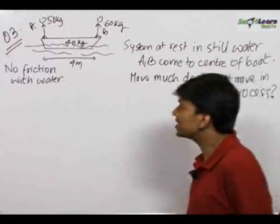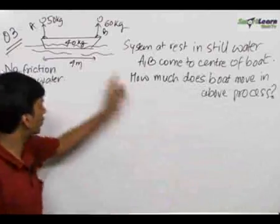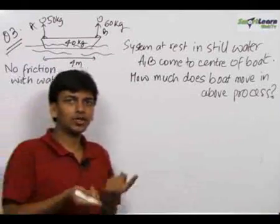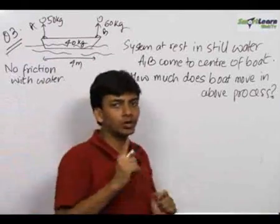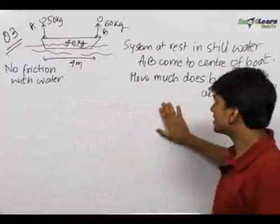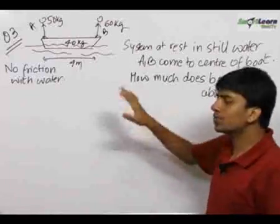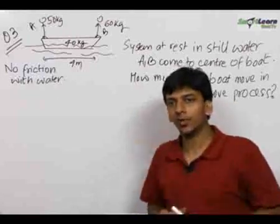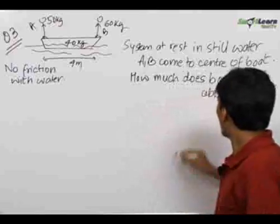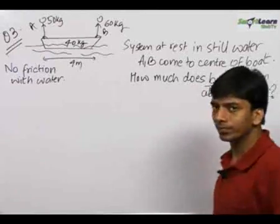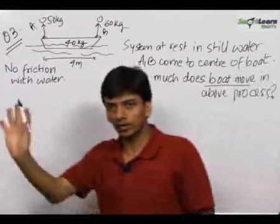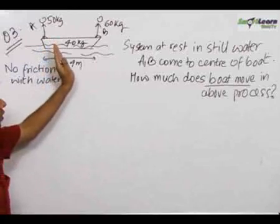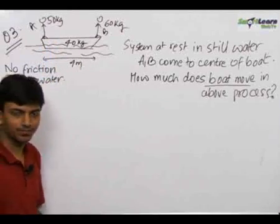A and B decide to come to the centre of the boat and meet. So A and B come to the centre of the boat. The question is: in this process, how much does the boat move relative to the water? We have to find that out.